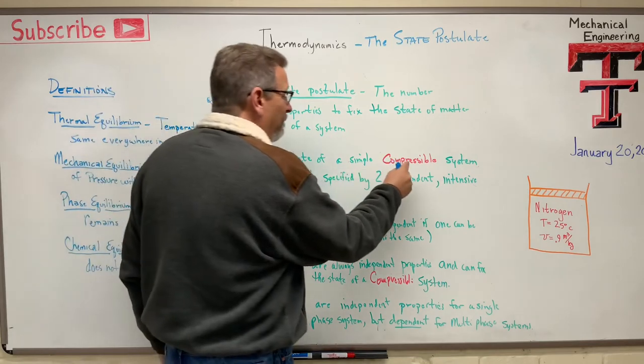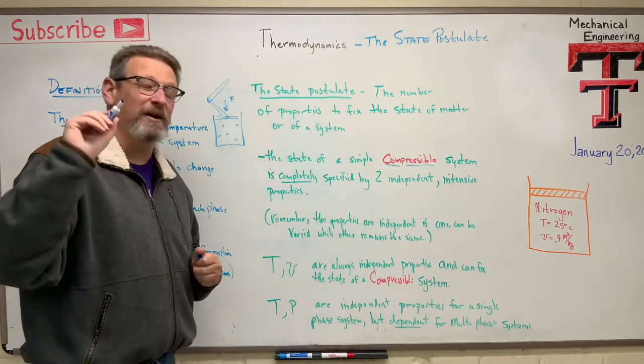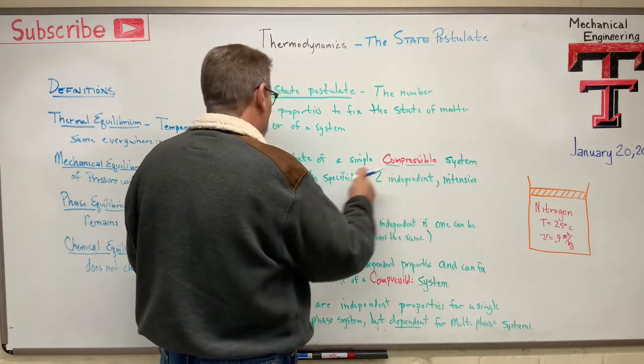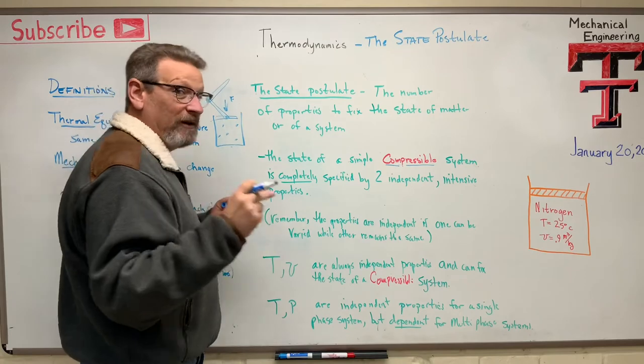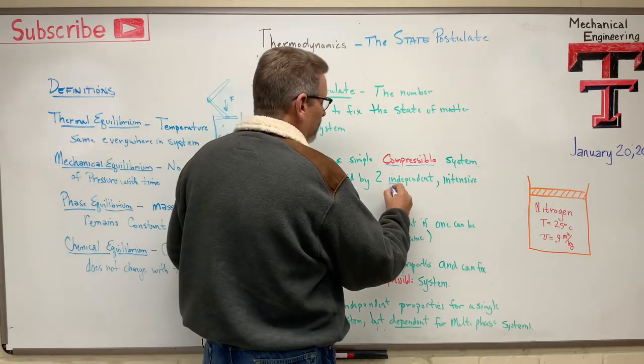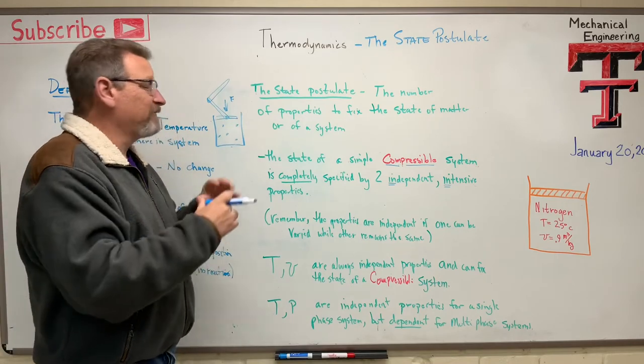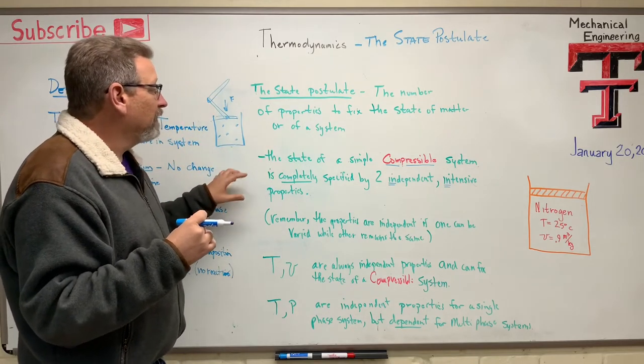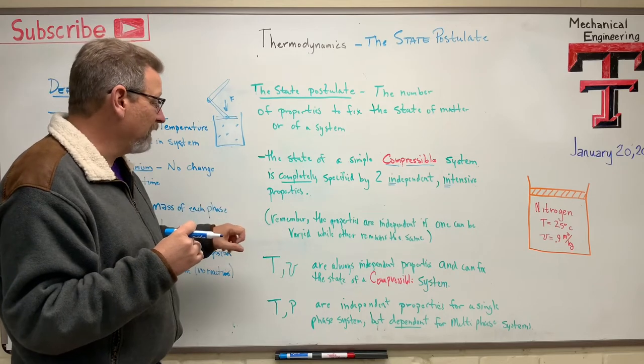The state of a simple compressible system. I've made that in red, I'm going to underline it. A compressible system, which means it's some kind of gas or steam or something like that, is completely specified by two independent intensive properties. And if you don't remember what intensive or independent properties are, go back to the last video, review that, and remember this. Independent, intensive. Those are properties that don't change if the size of the system changes. So compressible system completely defined by two independent intensive properties.